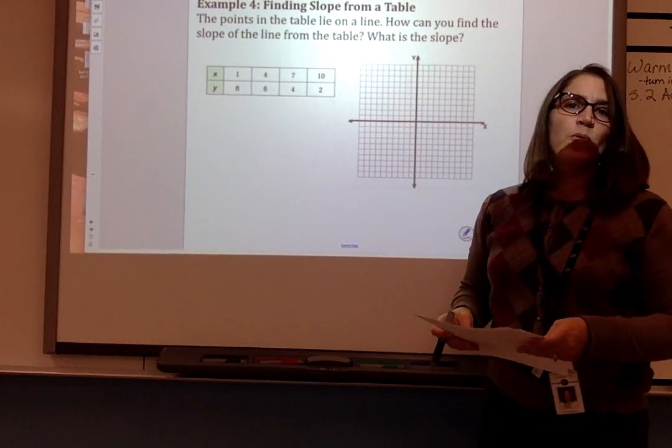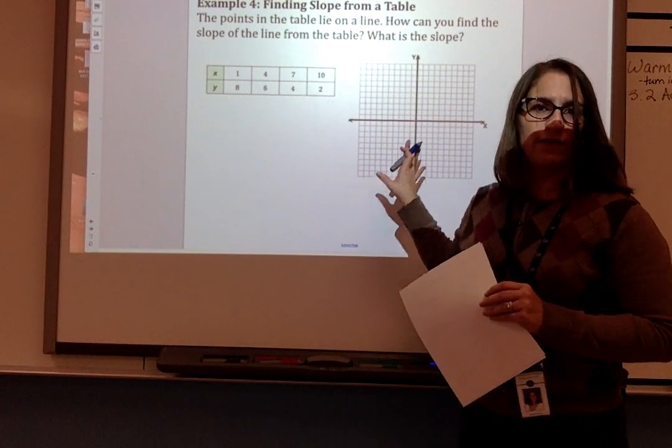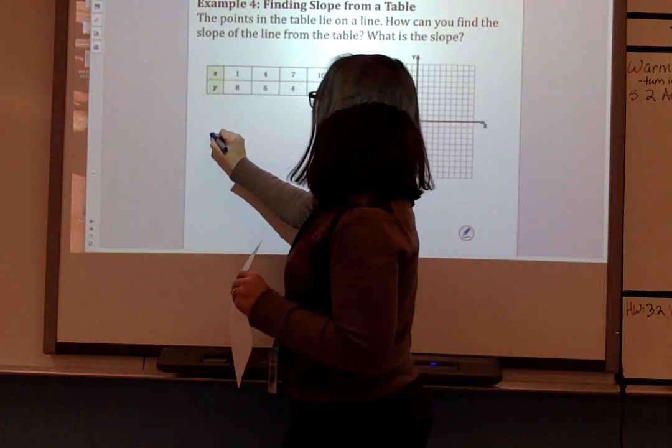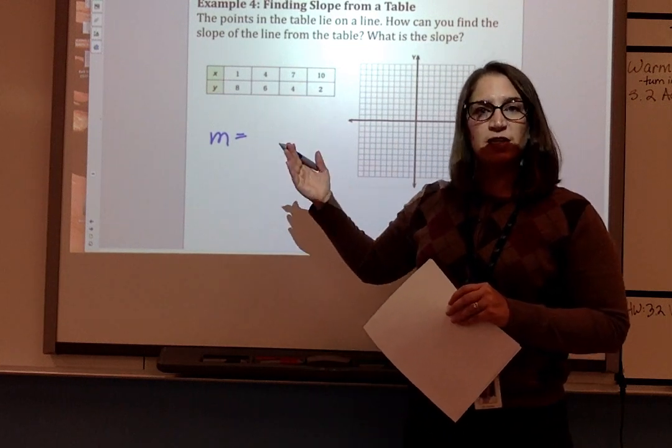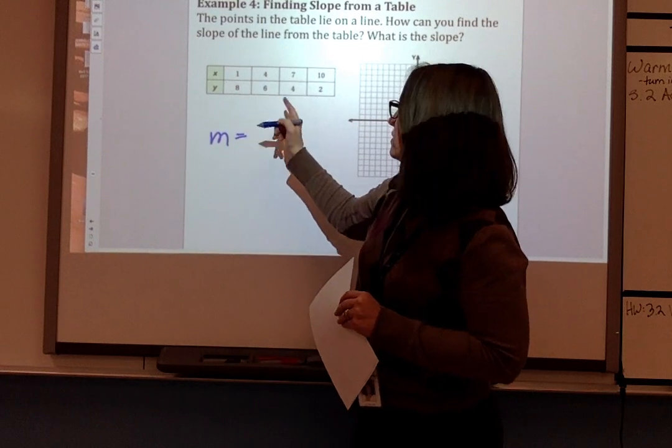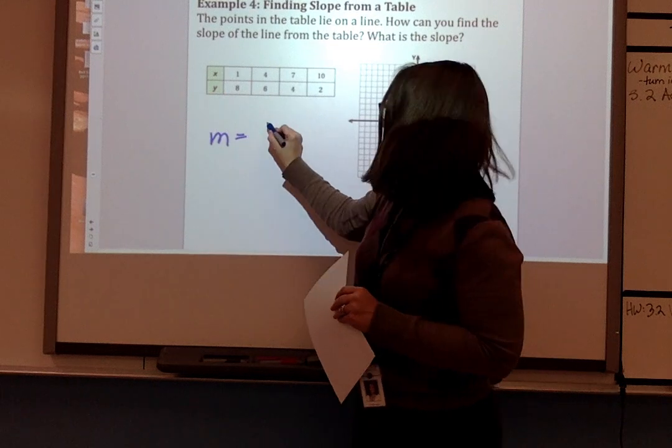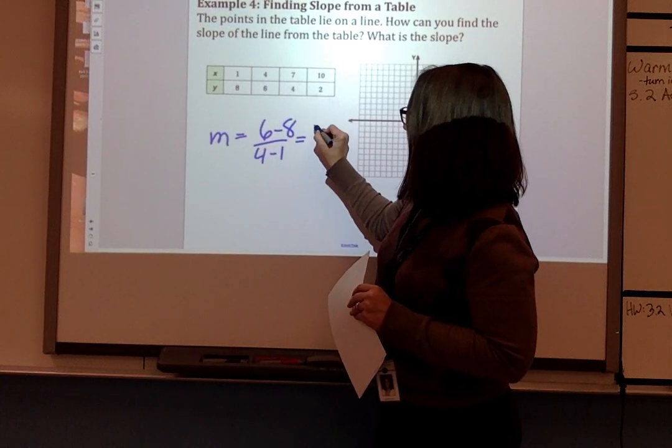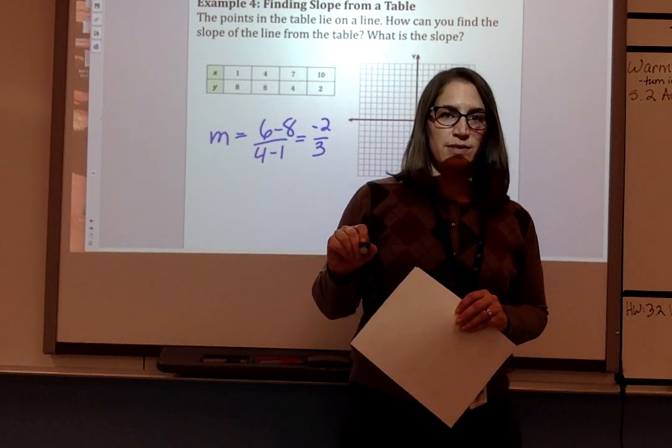Let's look at an example where we're finding the slope from a table. So before we graph these points, we're going to use the table to find the slope. We can use any two points we want. We've been given four points, but we just need to be consistent over which number we're subtracting from the other one. So I'm going to do 6 minus 8 over 4 minus 1. That's negative 2 over 3, so negative 2 thirds is our slope.